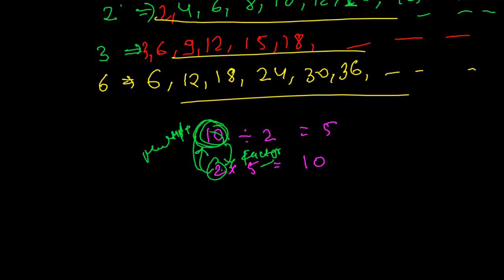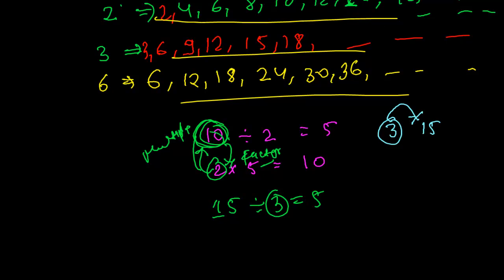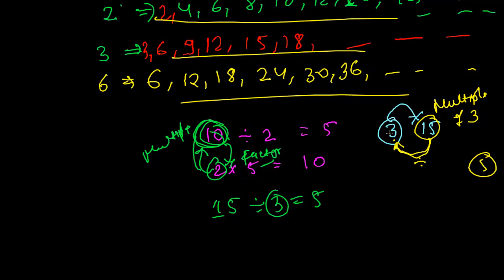To make it clear: if you have 15, then 15 is divisible by 3 exactly 5 times. Since 3 can exactly divide 15, I can say 15 is the multiple of 3. And since 15 can be divided by 3 exactly 5 times, 3 is the factor of 15.